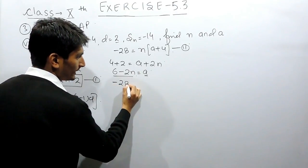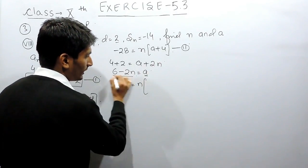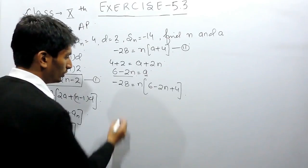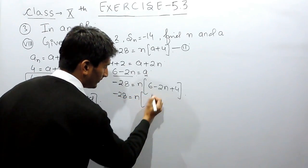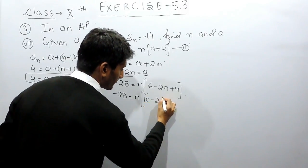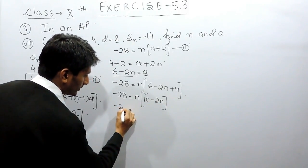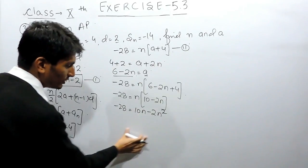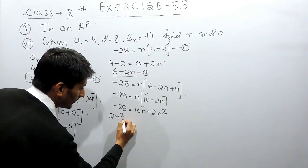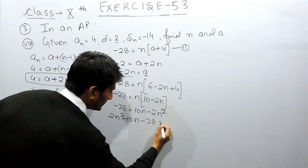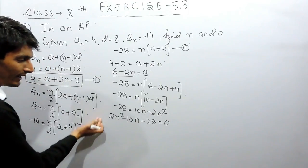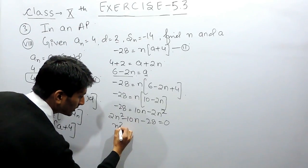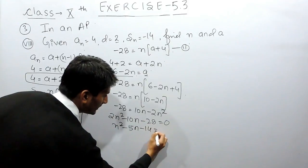Substituting the value of a into equation two: minus 28 equals n times 6 minus 2n plus 4, which becomes minus 28 equals n times 10 minus 2n. Expanding: n times 10 is 10n and n times 2n is 2n squared. Rearranging, this becomes 2n squared minus 10n minus 28 equals 0. Taking 2 as common and dividing, this gives n squared minus 5n minus 14 equals 0.